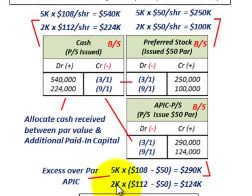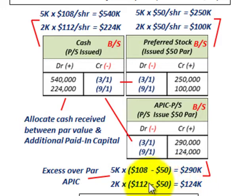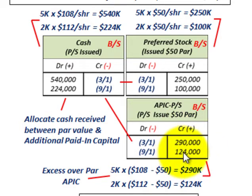For September 1st, we had two thousand shares times the difference between the issue price of a hundred and twelve dollars and the fifty dollar par value. That difference times two thousand shares gives us a hundred and twenty-four thousand dollars, which goes to additional paid-in capital on September 1st.